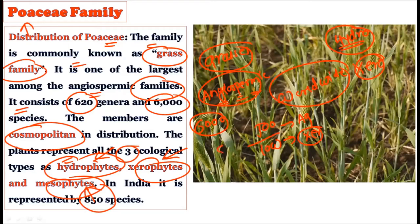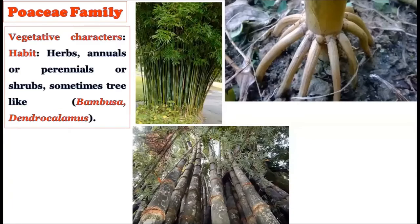In India, nearly 850 species of this Poaceae family are found. To summarize distribution: it is famously called the grass family, it is a large family with more than 6000 species, cosmopolitan in distribution across hydrophytic, xerophytic, and mesophytic habitats, with 850 species represented from India.